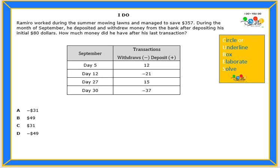Let's start by reading the I Do problem. Ramiro worked during the summer mowing lawns and managed to save $357. During the month of September, he deposited and withdrew money from the bank after depositing his initial $80. How much money did he have after his last transaction?